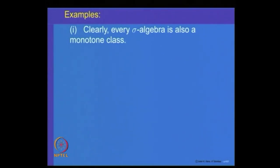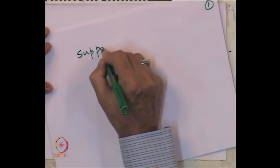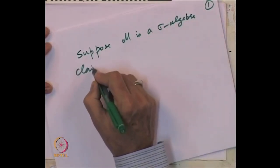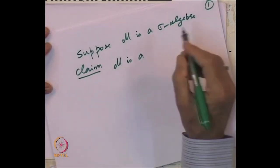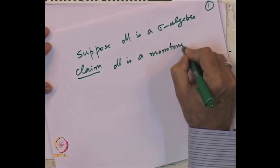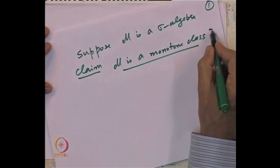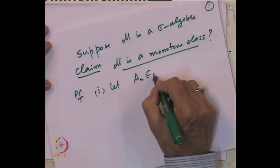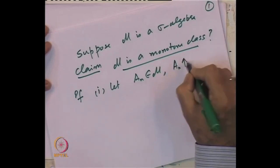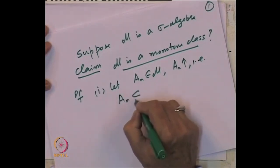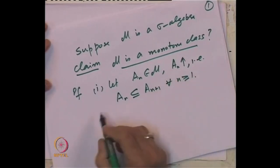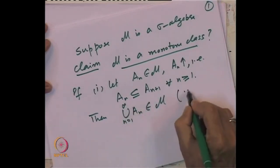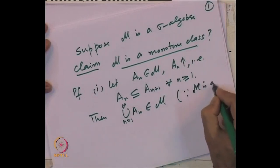Let us write this formally. Suppose M is a sigma algebra. Claim: M is a monotone class. To prove this, first let A_n belong to M with A_n increasing, i.e., A_n ⊆ A_{n+1} for every n ≥ 1. Then the union of A_n from n=1 to infinity belongs to M, because M is a sigma algebra and is closed under all countable unions.